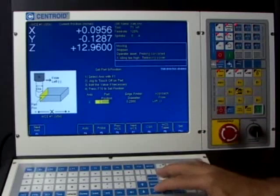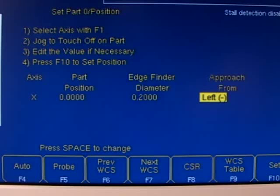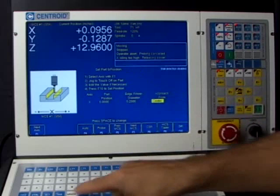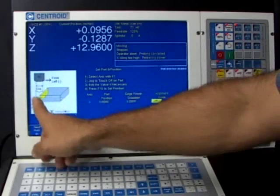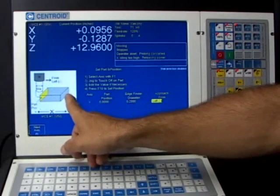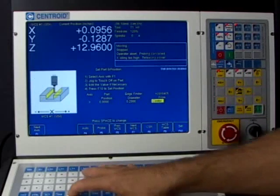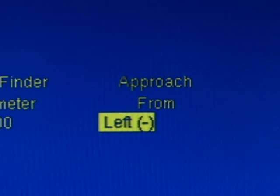So what we need to do is move the cursor over here to the approach from setting and use the space bar to change that to center. There's three choices here, center, right, and left. Well, the left and right are used for when you're touching off with an edge finder. We're not doing that. We're using a center finder. So we're going to leave this on center.